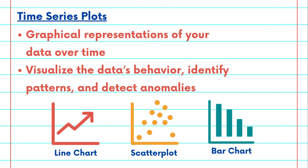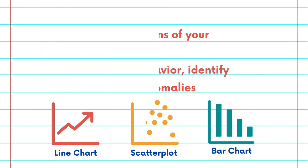Each serves a specific purpose. For example, a line plot is excellent for showing the trend, while a scatter plot can reveal relationships between variables.